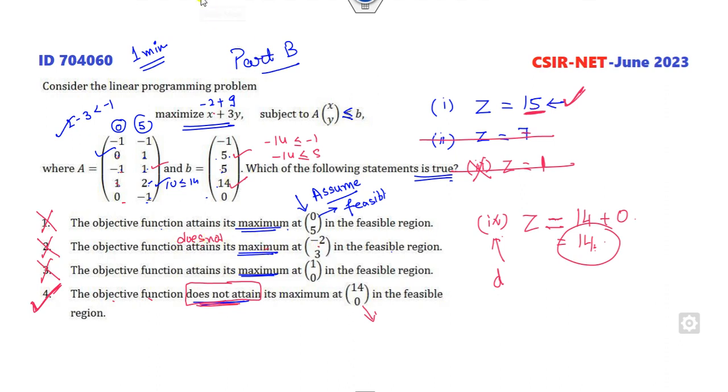If it said it does not attain maximum at this, then it is also the right answer. But in this case, it only says it's here, so the right answer is my fourth option, which is the correct option.